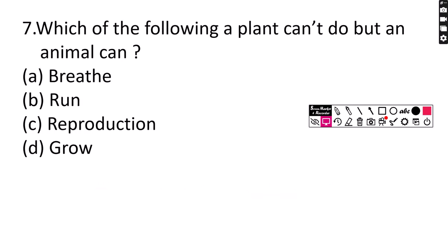Number 7. Which of the following a plant cannot do but an animal can? A. Breathe, B. Run, C. Reproduction, D. Grow. Correct answer is option B, Run.